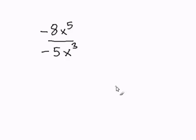Dividing Variables. When dividing variables, the first thing we have to do is to simplify our coefficient. In this case, our coefficient is negative 8 and negative 5,